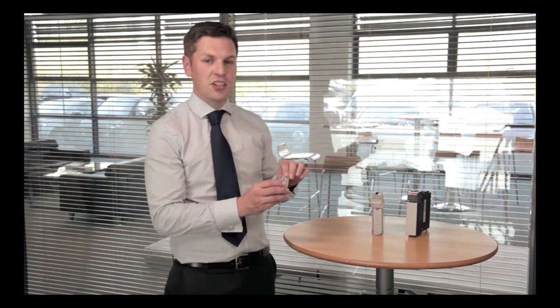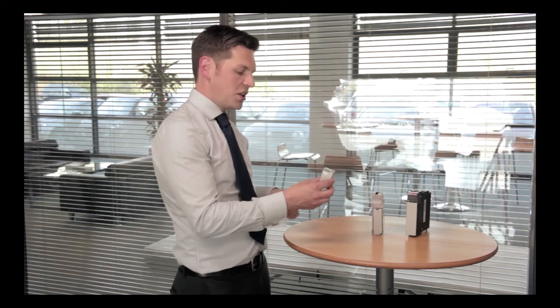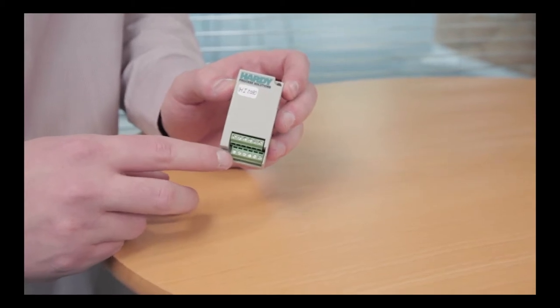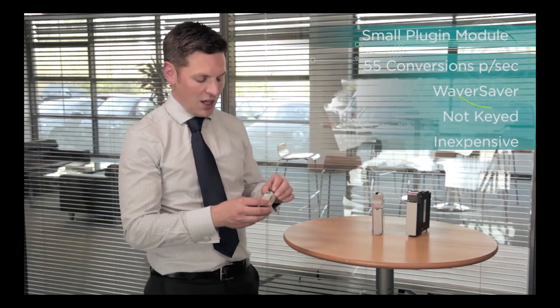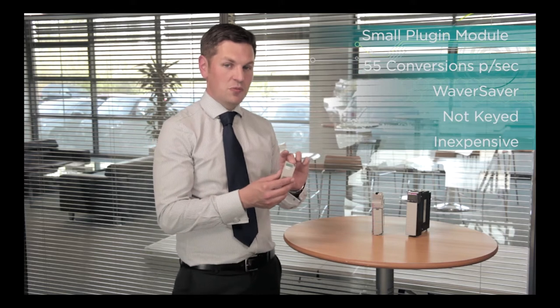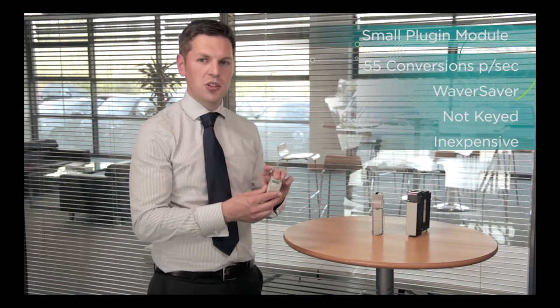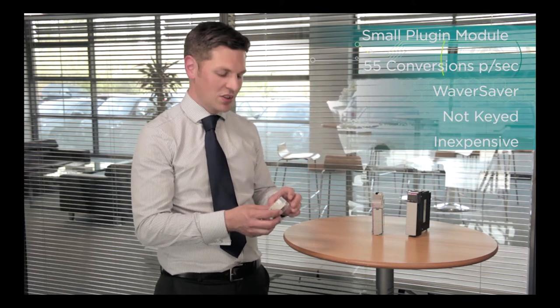It's basically an inexpensive way of getting weighing data into your PLC. Plug it in, feed the weight scale module into it, and then it will give you real tag values for weight. Despite being inexpensive, it still does 55 conversions a second and it's a really useful intro to the Hardy range.